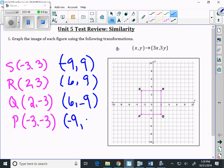And that's what we're going to graph over here. Negative 9, negative 9. So that's our new s. Here's 6, 9. Here's our new r.